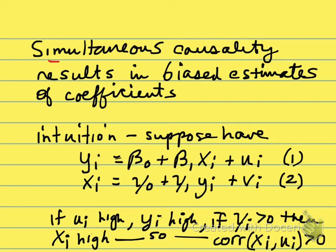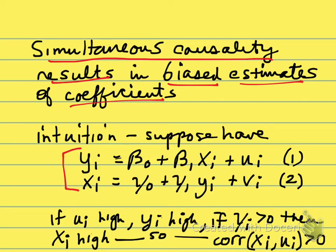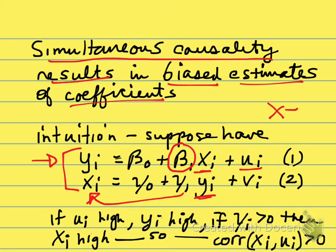I would like to cover some of the basic math of simultaneous causality and show how it results in biased estimates of coefficients of interest. Suppose we have two equations: an equation of interest where we have some outcome y as a function of x, and we're interested in estimating beta 1. But suppose we also think that the level of y is a determinant of the level of x — so there is simultaneous causality: x causes y, but y in turn causes x.